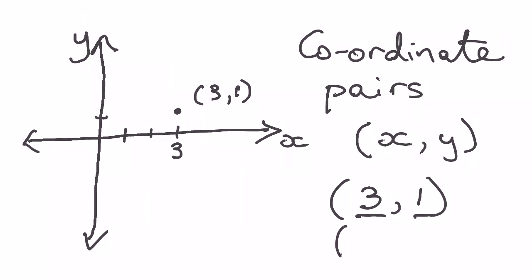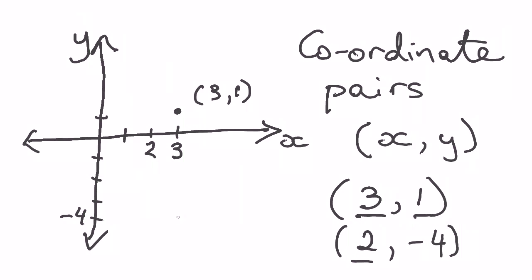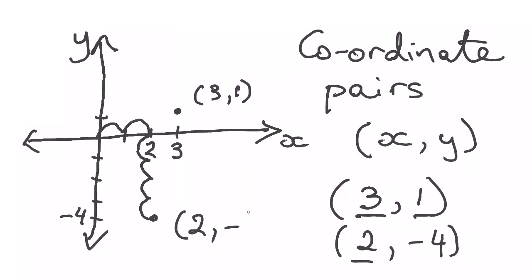Let's do another one — the coordinate point (2, negative 4). I start with my x value and go across 2: 1, 2. That's there. Then I have to go down negative 4: 1, 2, 3, 4. I need to go across to 2 and then down 1, 2, 3, 4. That brings me to the point (2, negative 4).